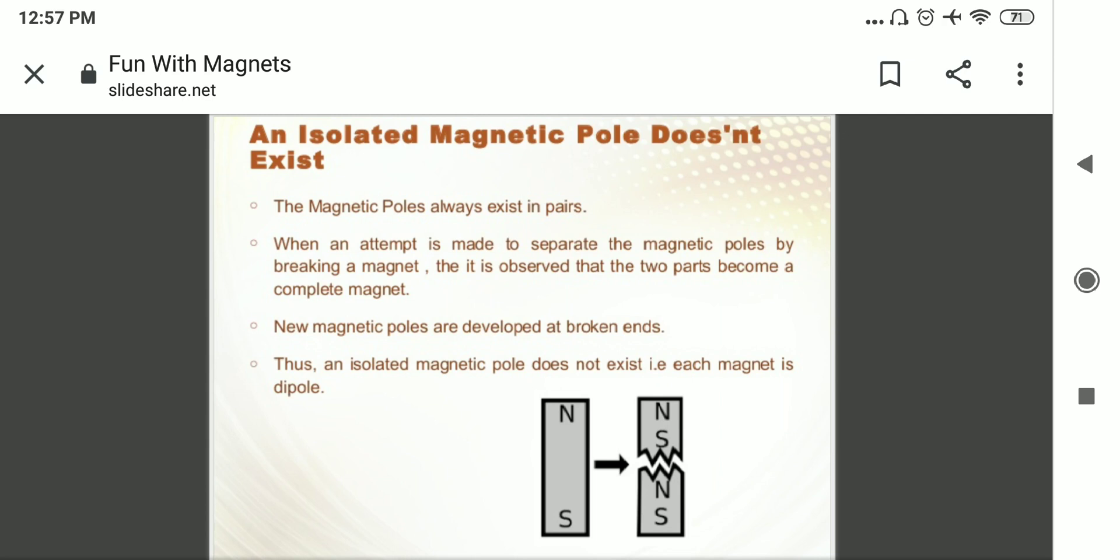Or if the one end is south pole, then the second end becomes a north pole. So by this activity we can say that magnetic poles can't be separated, they can't exist isolated. Isolated means they can't exist single, they always exist in pairs.